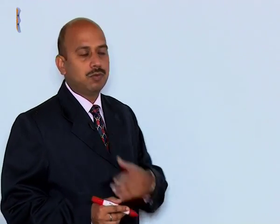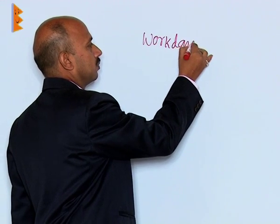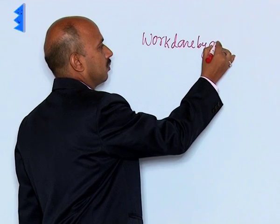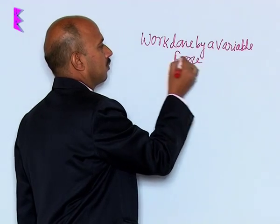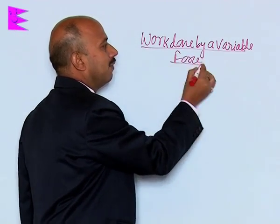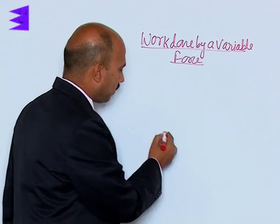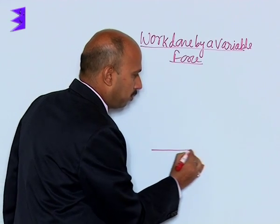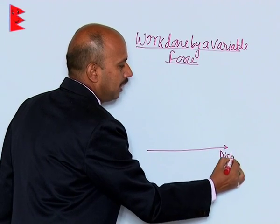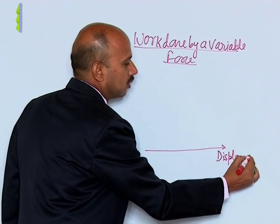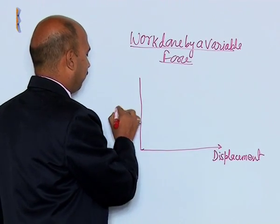Let us calculate work done by a variable force. Suppose a body is moving along the x-axis from A to B. In this case, suppose the body is moving in this direction — we can take this side as displacement along the x-axis, and along the y-axis we can take force.